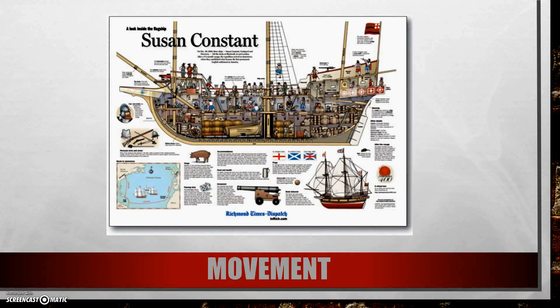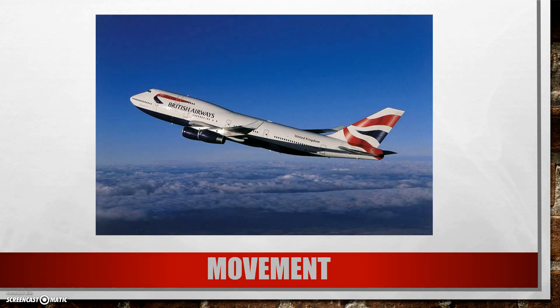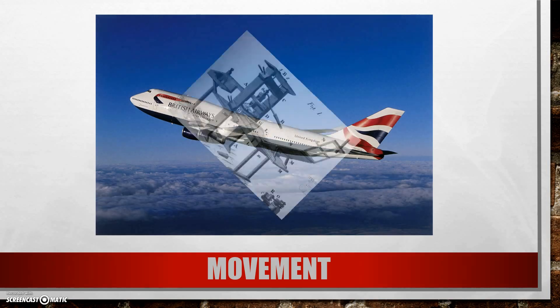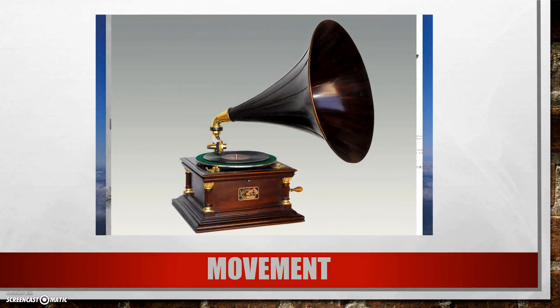Our fifth and final theme was movement. This could be everything from the Susan Constant, which you learned about last year, moving people and goods back and forth across the ocean, to modern-day airplanes which can move people or goods. We also talked about the movement of information — in this case a printing press, a model of the first printing press, which allowed people to make many copies of papers, newspapers, and letters instead of writing them by hand. And the phonograph, which recorded sound and allowed music and voices to be shared over great distances.